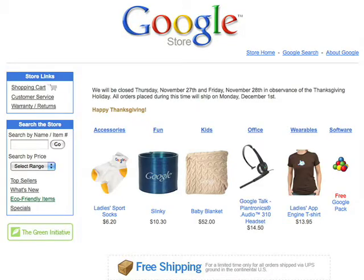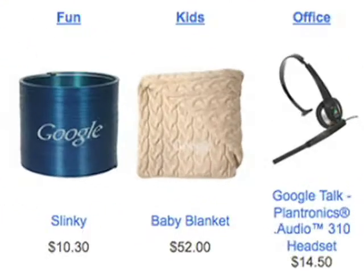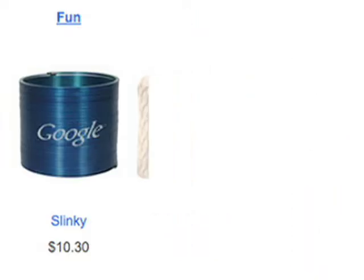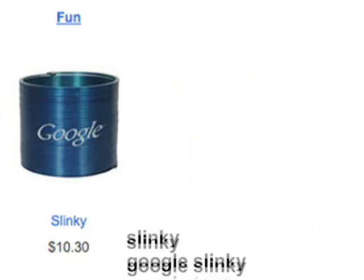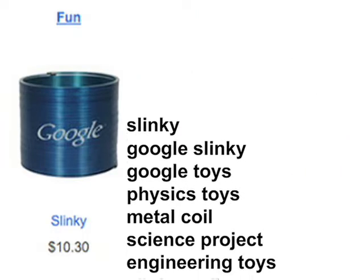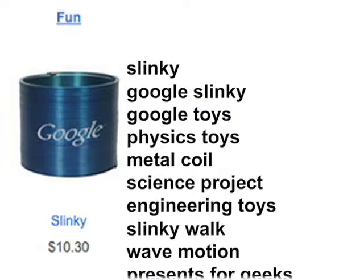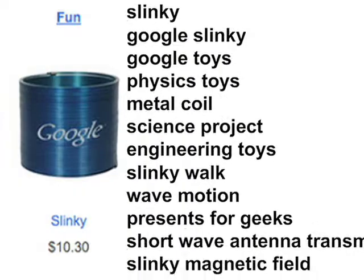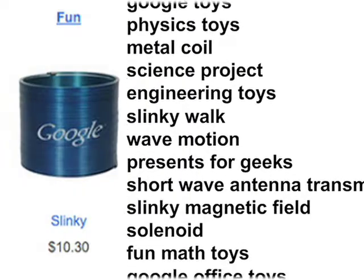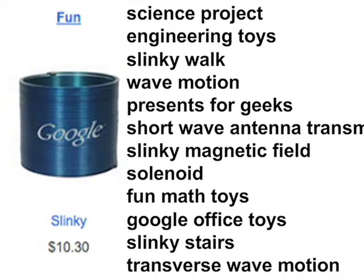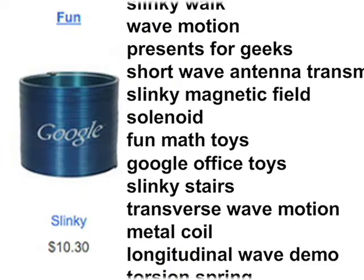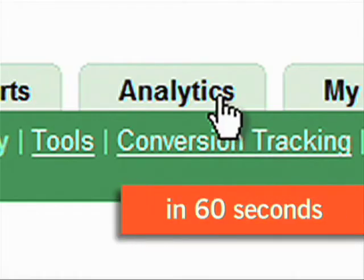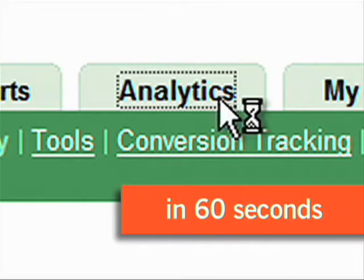If you have an e-commerce site, you can track sales down to the product level with Google Analytics. You can identify the AdWords keywords generating the most profit and refine your keyword bid amounts based on ROI calculations. Here's how with Google Analytics in 60 seconds.